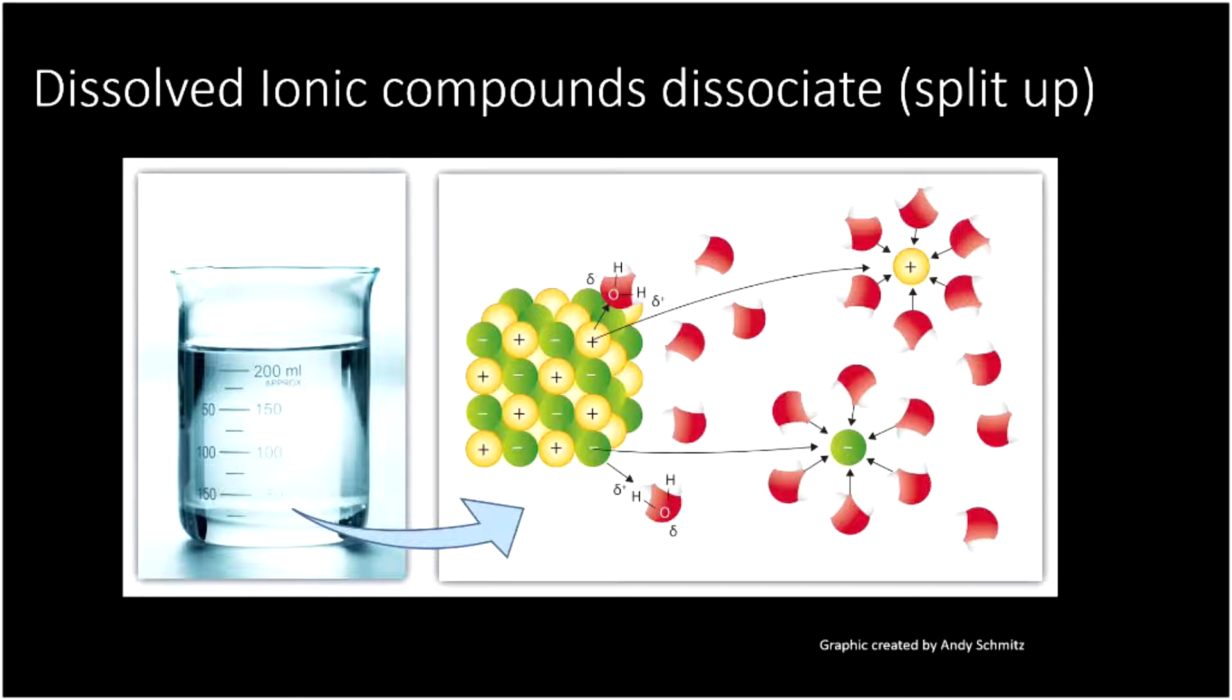So they dissociate. That is, they split up. And very specifically in water, remember that our hydrogens on our water are a little positive. And the oxygen on our water, represented in red there, is a little negative. And so all the hydrogens hang out around a negative charge. Whereas all the oxygens, which are a little negative, hang out around a positive charge. So dissolved ionic compounds dissociate. That is, they split up in water.